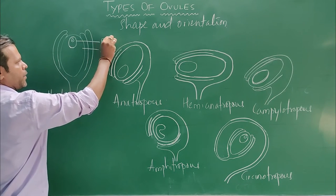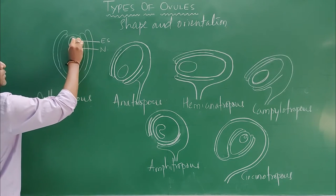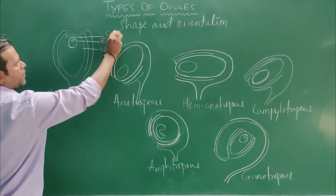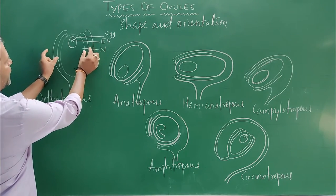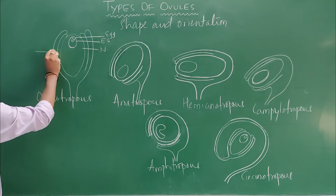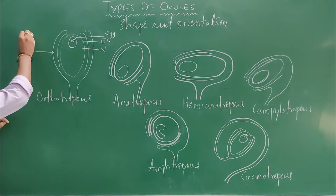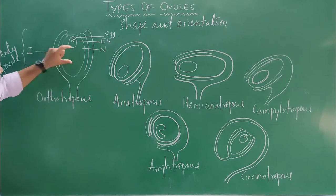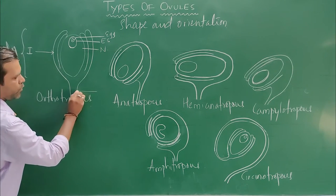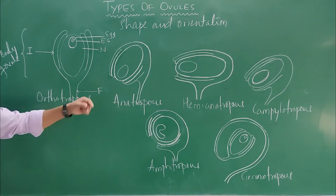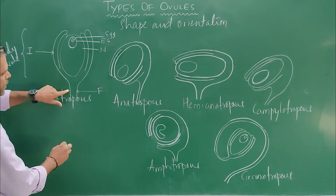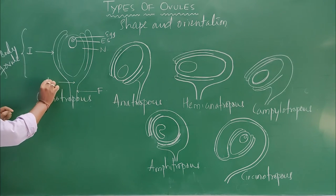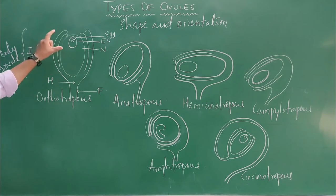This one is the embryo sac, and inside it is the egg. These are the two coverings of the ovule called integuments. This entire body of the ovule is connected to a stalk called the funicle. The body of the ovule connects to the funicle at a region called the hilum.